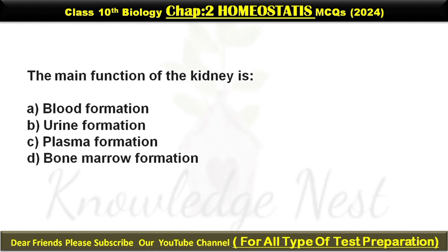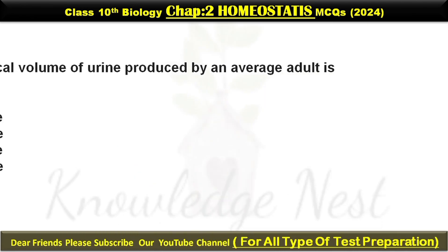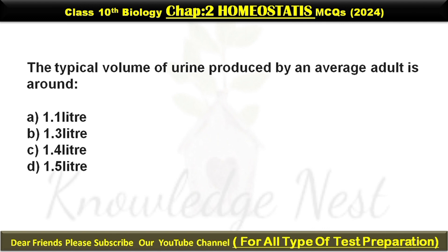The main function of the kidney is... Option B is the correct answer. The typical volume of urine produced by an average adult is around... Option C is the correct answer.